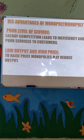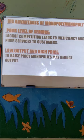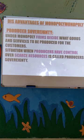The next disadvantage is low output and high price. To raise the price, the monopolist may reduce the output. We saw that one advantage is a low price if they achieve economies of scale, but the monopolist, being a price maker, can also purposefully reduce the output and increase the price. If the quantity or supply in the market is less, automatically the price will rise. So to raise the price, they will reduce the output — that is one of the disadvantages of monopoly.